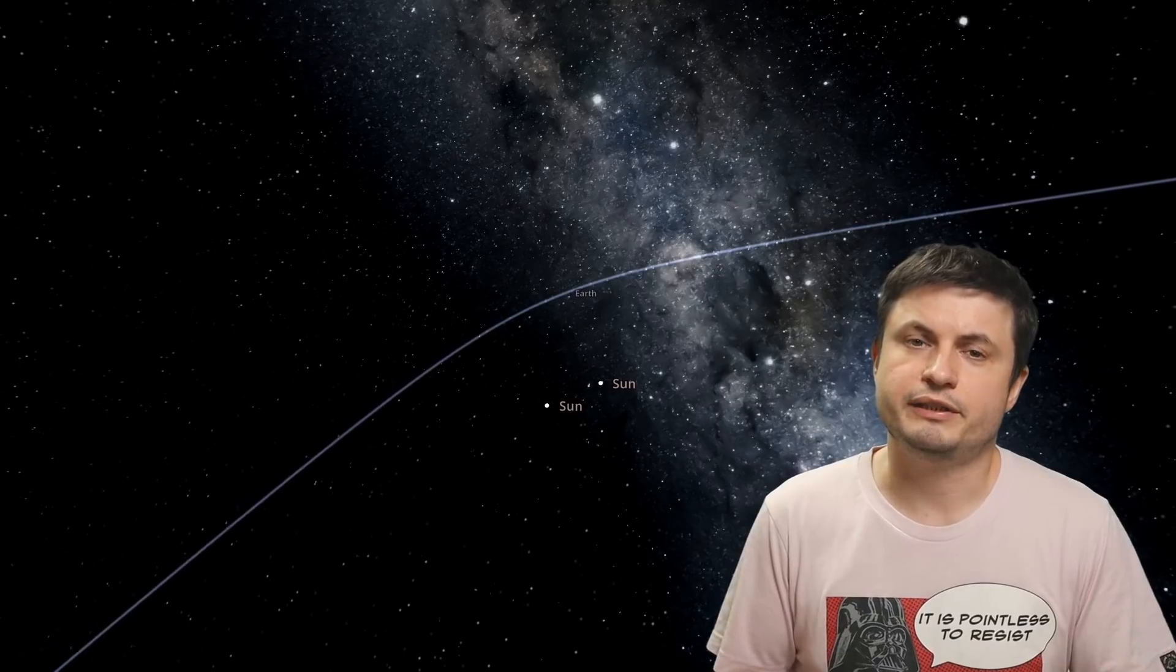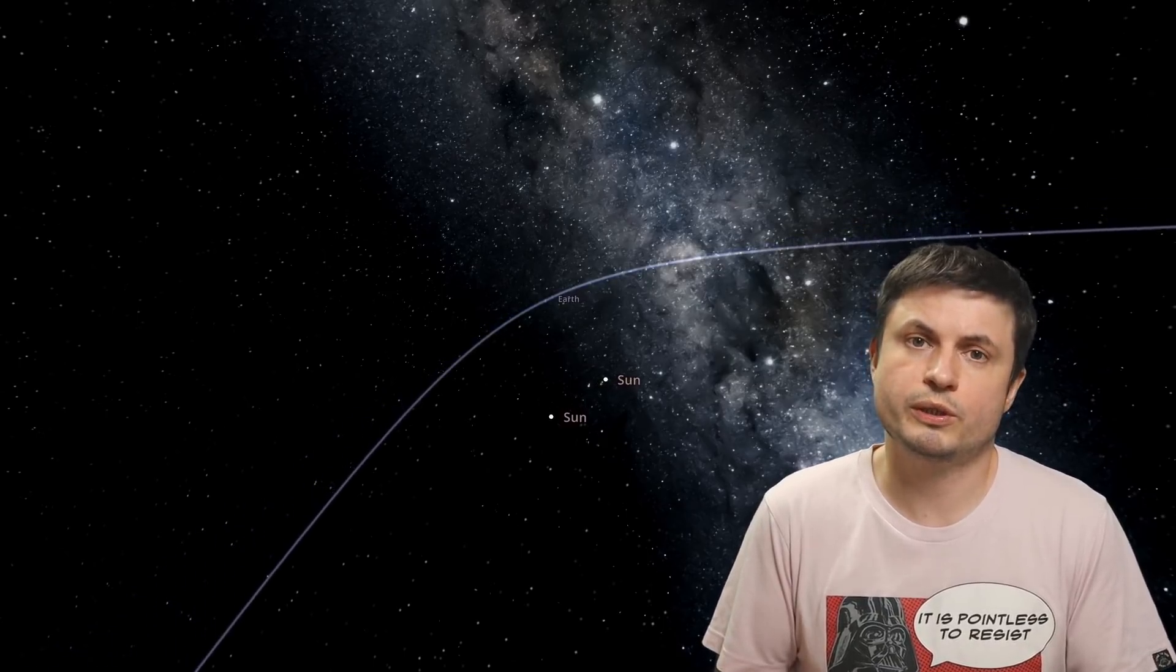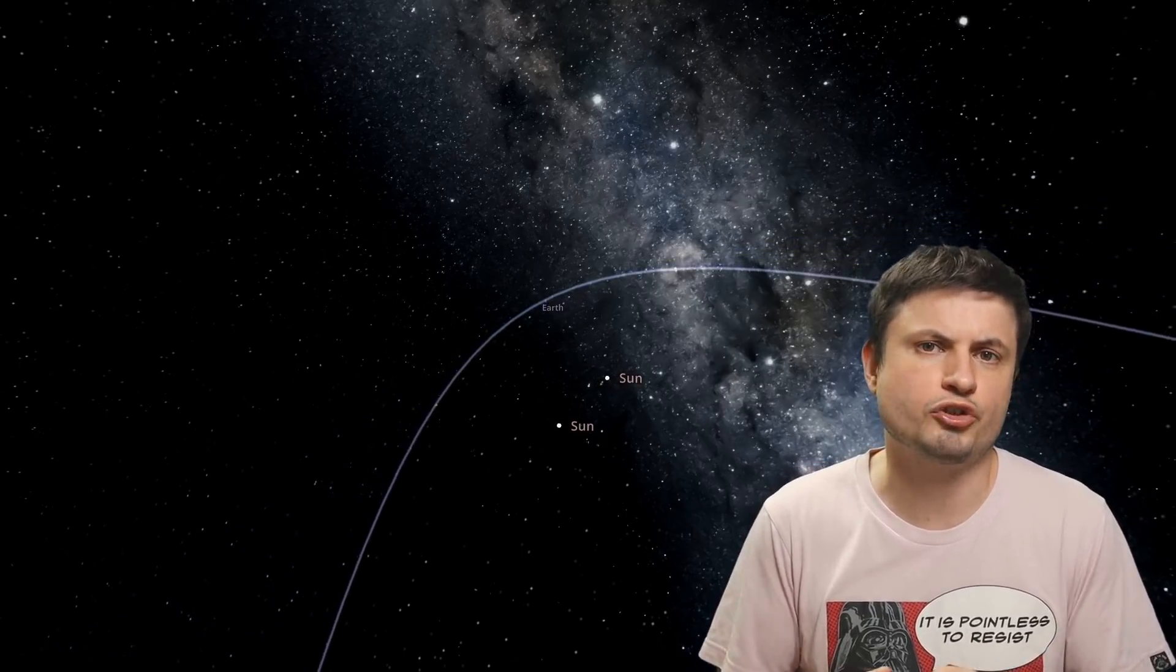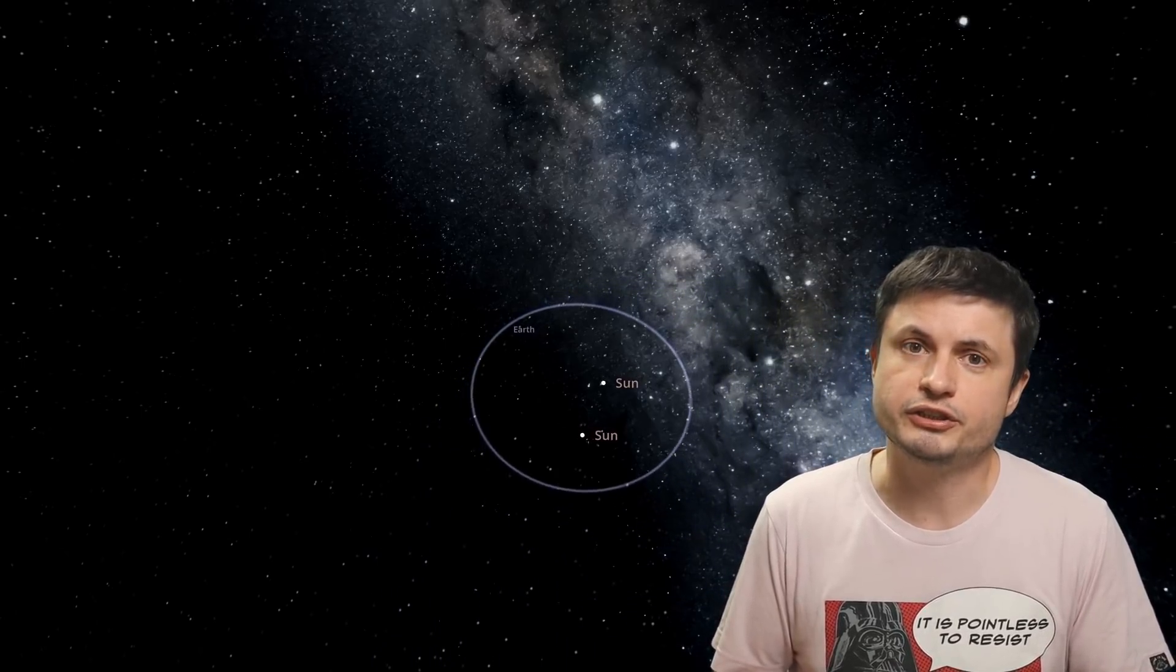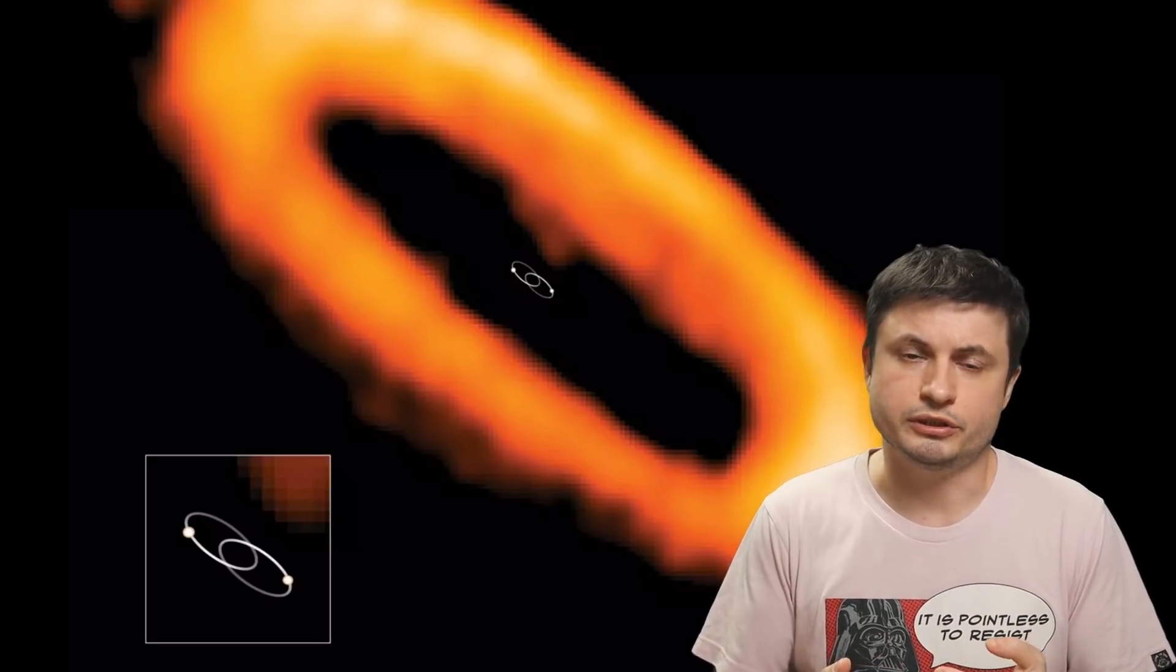And so because of this, we believe that this planet may have formed somewhere on the outskirts, maybe about three astronomical units away from the binary star system. But eventually, because of the presence of the planetary disk itself, it started to interact with the particles here, which created a bit of a drag, which led the planet to lose some of its velocity and move closer and closer to the center of the star system. And naturally, as it moved closer and closer, the orbit became destabilized, and eventually it most likely just got kicked out to the outskirts.